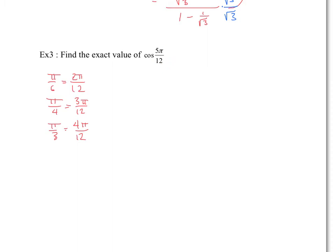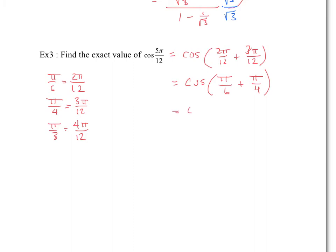So cos of 5π/12 is the same as cos of (2π/12 + 3π/12), which simplifies to cos of (π/6 + π/4). Using the cosine addition identity — cos(alpha + beta) equals cos alpha cos beta minus sin alpha sin beta — this becomes cos(π/6) times cos(π/4) minus sin(π/6) times sin(π/4).